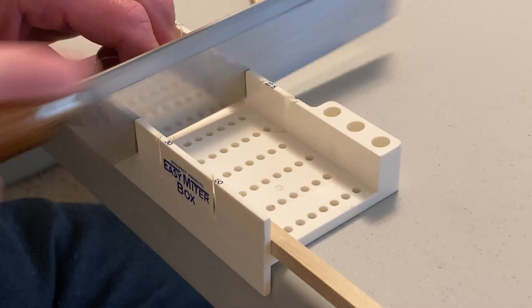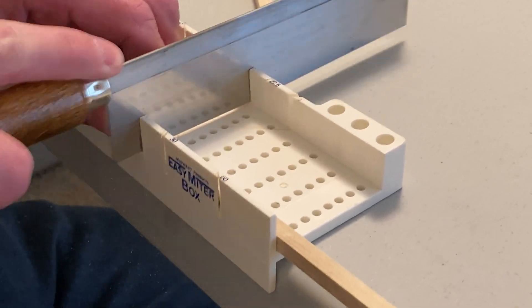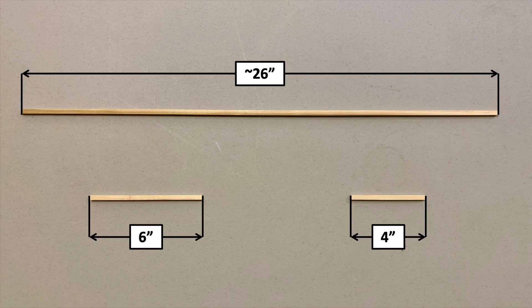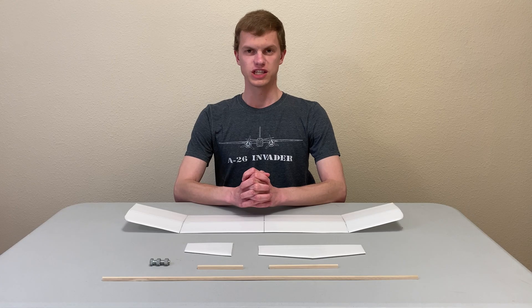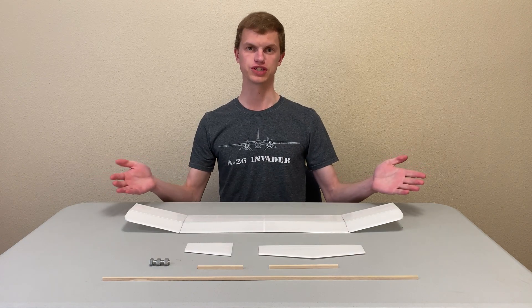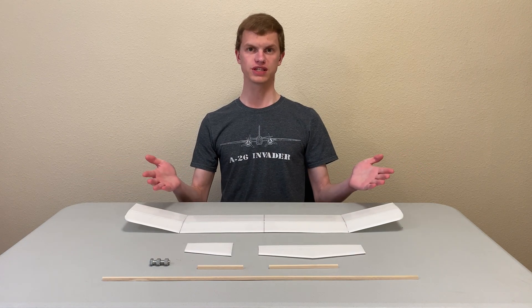Next, cut your wooden boom to the appropriate lengths. You'll need one piece that's six inches long, one four-inch piece, and one piece that's approximately 26 inches long depending on how much leftover wood you have. At this point, we've finished building all the pieces of the plane and it's time to start assembling it.